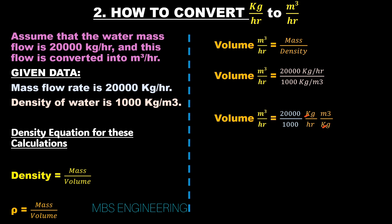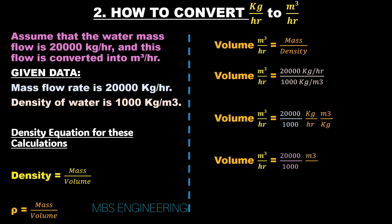Cancel the top and bottom kilogram units. We will get the value in meter cube per hour. Volume is equals to 20,000 divided by 1,000 meter cube per hour. Therefore the volume is equals to 20 meter cube per hour.